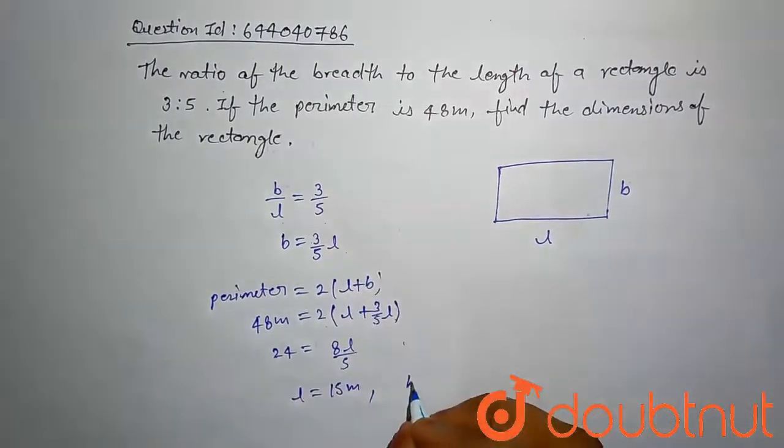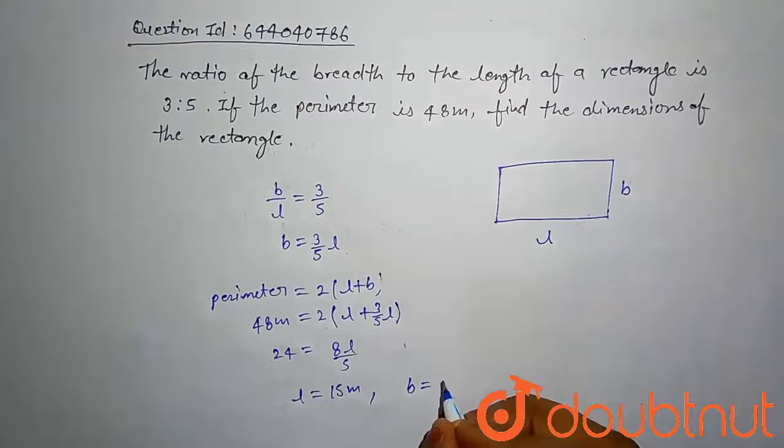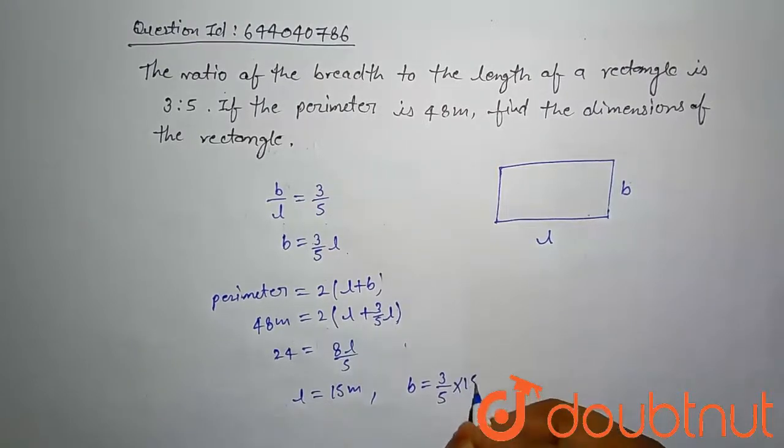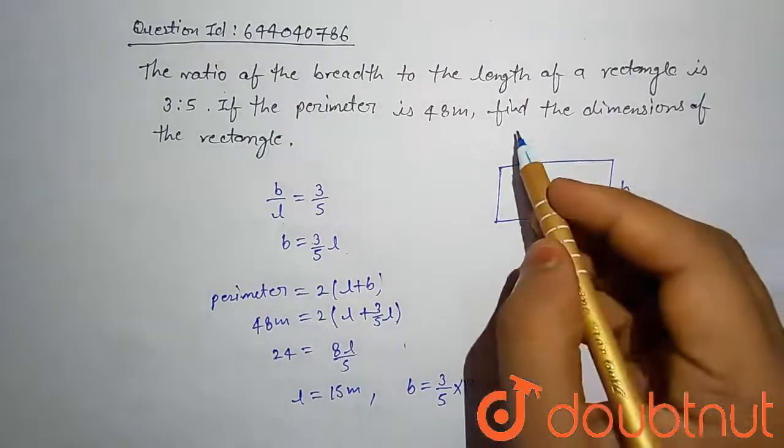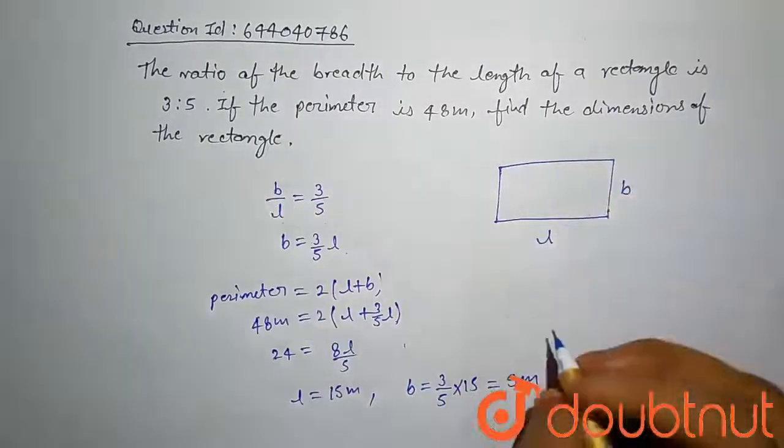Put this value here, then our b is 3 by 5 into 15, this is 9 meters.